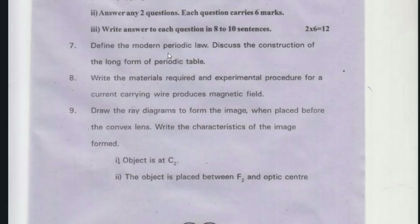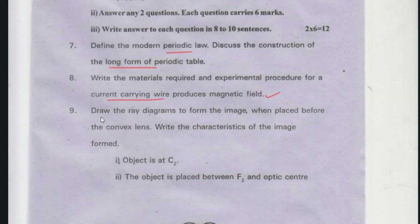Section 3 long answer: Define the modern periodic table and discuss the construction of the long form of the periodic table. Write the materials required and experiment procedure for current-carrying wire producing a magnetic field. Draw the ray diagram to form the image when an object is placed before the convex lens — object at C2, and object placed between F2 and the optic center.